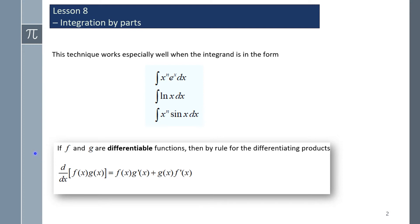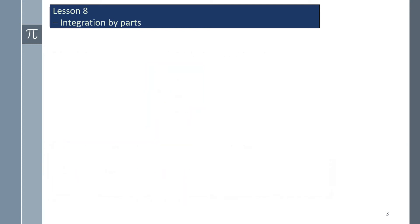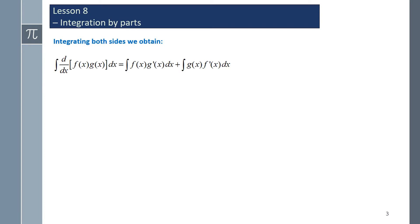If f and g are differentiable functions, then by the rule for differentiating products — the product rule — we have the derivative of f(x)·g(x) equals f(x)·g'(x) plus g(x)·f'(x). The following is a proof of how we obtain the rule for integration by parts. Integrating both sides, we obtain the following.